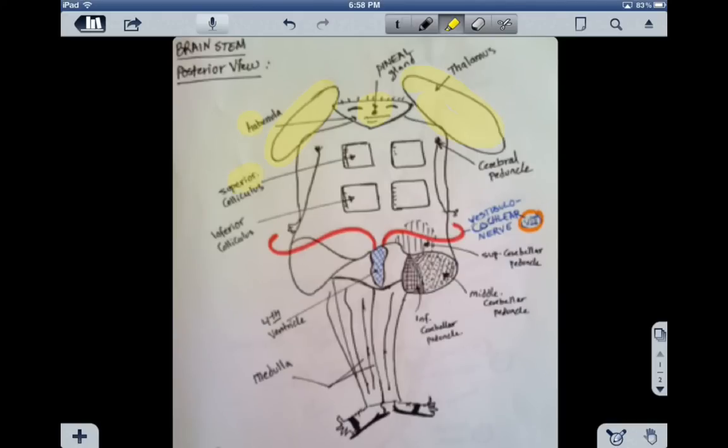We're going to have the superior colliculus, these two structures, and inferior colliculus, inferior below structures.